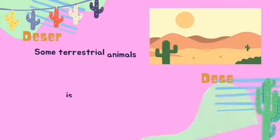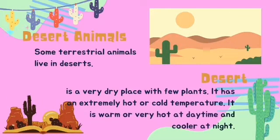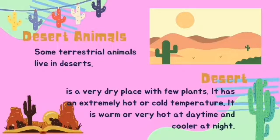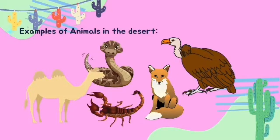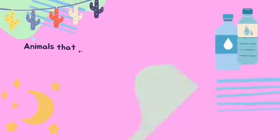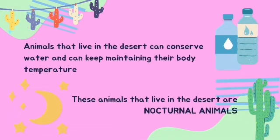Some terrestrial animals live in deserts. A desert is a very dry place with few plants. It is an extremely hot or cold temperature — warm or very hot at daytime and cooler at night. Camels, rattlesnakes, coyotes, vultures, and scorpions are among the animals found in the desert. Desert animals can conserve water and maintain their body temperature. These animals are nocturnal animals.